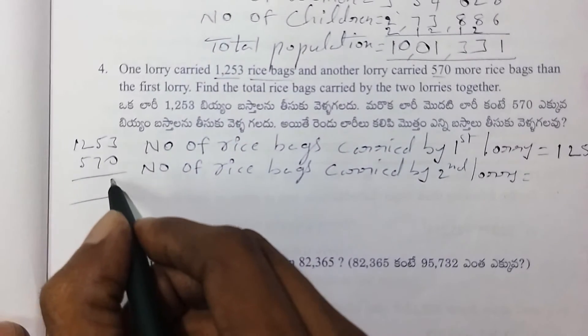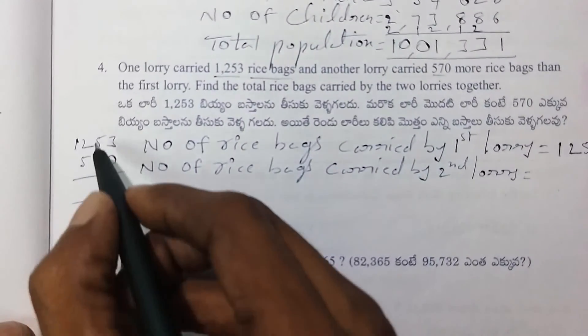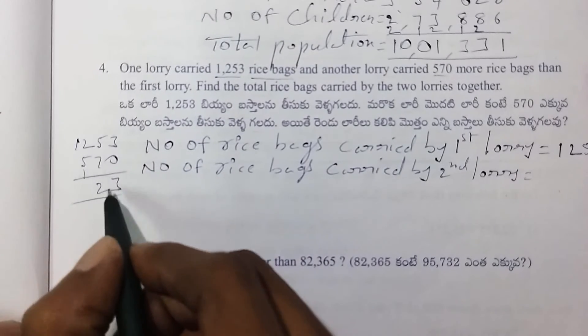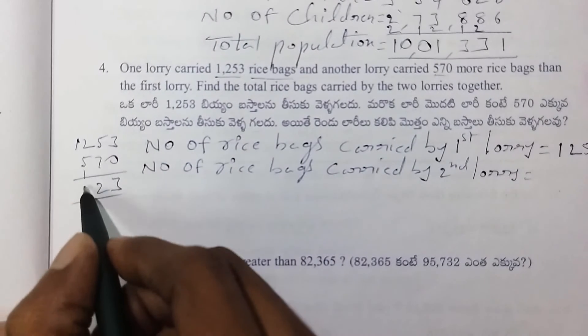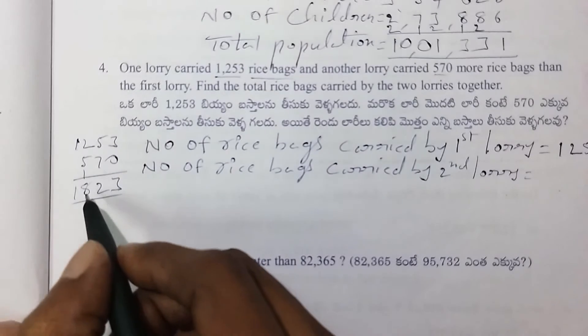23 plus 03. 5 plus 7 is 12. 5 plus 16 is 7, 8, 1. And second lorry is 1,823.